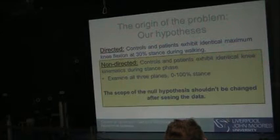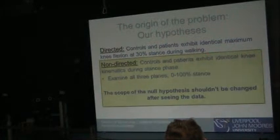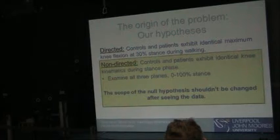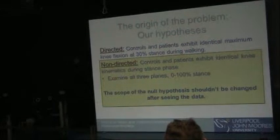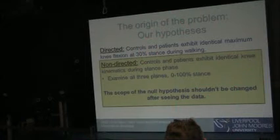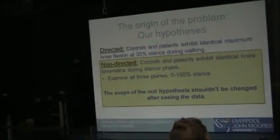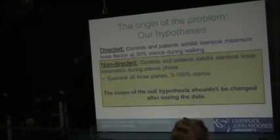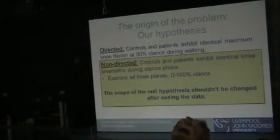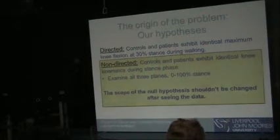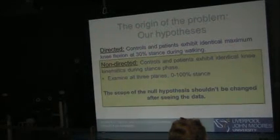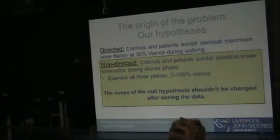What you should actually identify is: controls and patients exhibit identical knee kinematics during stance phase. That is really how we should say it, which means you're not focusing on one particular part of the stance phase but on the whole stance phase, and you're not focusing on knee flexion necessarily but on the full kinematics of the knee. So what this leads us to is we have all this data that we struggle with, but the problem is the scope of our null hypothesis should not be changed after seeing the data. We want to observe the data, find where there is something meaningful, and then only report that, which means we actually make a very important error there: an error of bias.